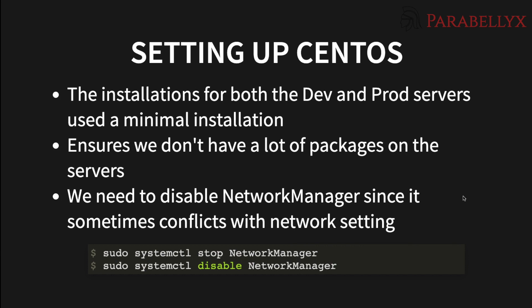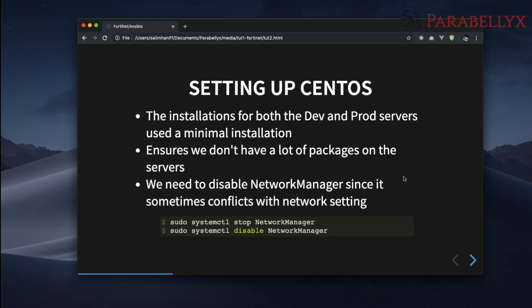Right now we're going to go through the installation of CentOS. Before I started this tutorial, I've already set up the dev and prod servers using the minimal installation possible. This is to ensure that we do not have a lot of packages on the server. The first thing we need to do is also disable Network Manager, because sometimes with Network Manager running while you're playing with configurations in the back, the automation can conflict and leads to really weird things going on with the network stack.